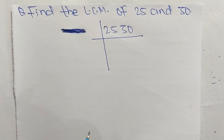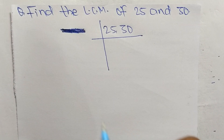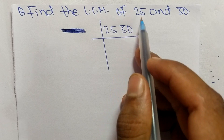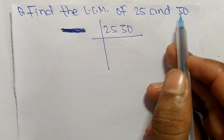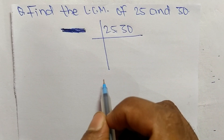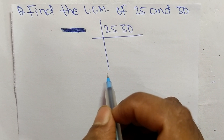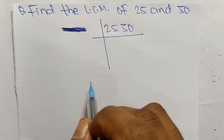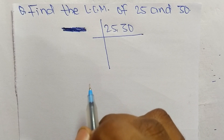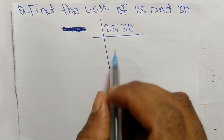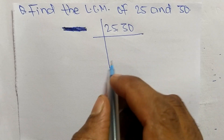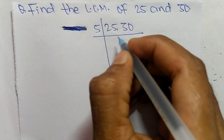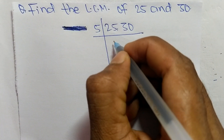Today in this video we shall learn to find the LCM of 25 and 30. To find the LCM, first we choose the lowest number that can exactly divide both 25 and 30, which is 5.